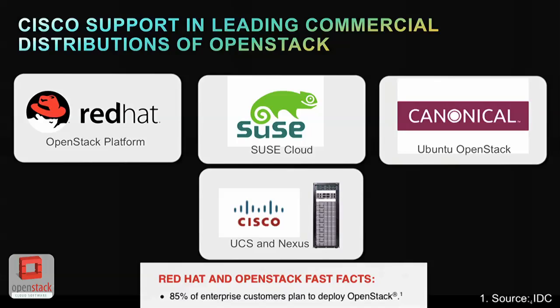We're supported by all the major Linux distributions — Red Hat, SUSE, and Canonical — seeing great traction with OpenStack in customers across all verticals, including service provider and enterprise. A recent survey done by IDC with Red Hat customers found that 85% of every Red Hat enterprise customer surveyed plans to deploy OpenStack in production in the next few years. So there's tremendous interest in OpenStack from the customer base.